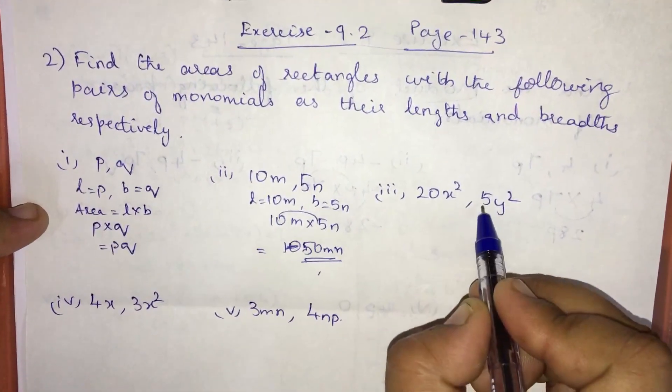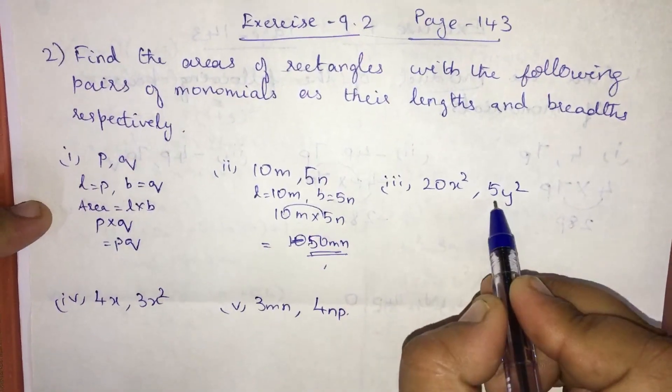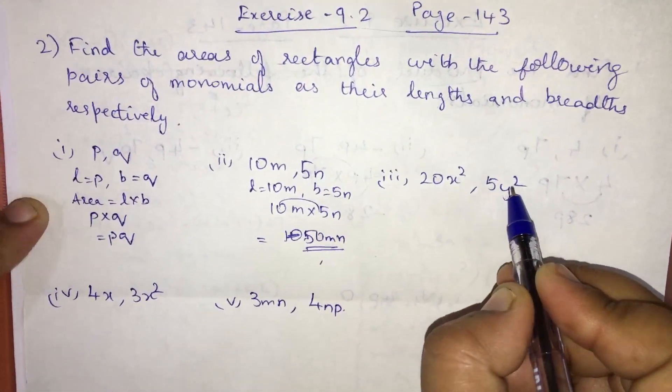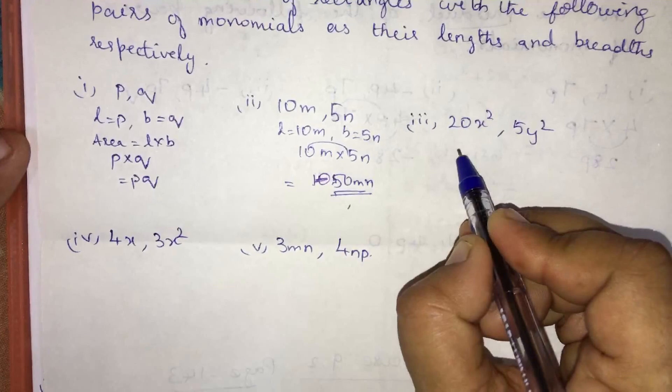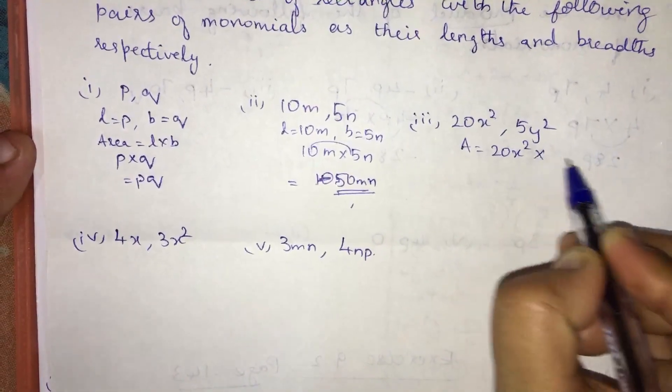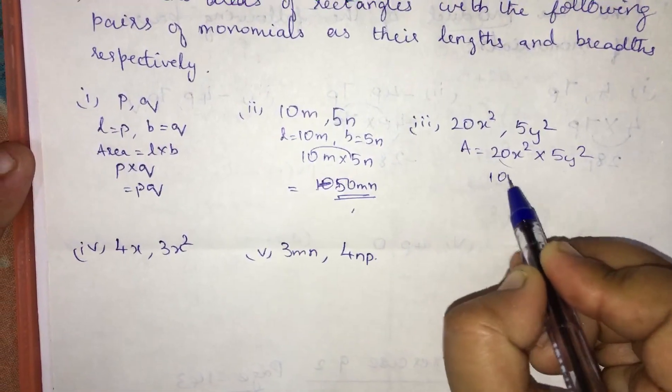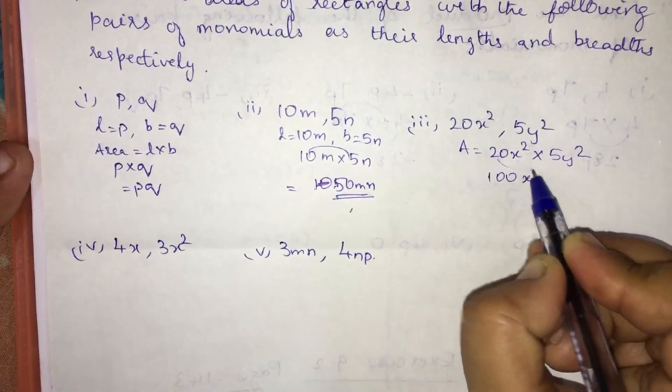20x square, 5y square. Length is 20x square, breadth is 5y square. Area is equal to 20x square into 5y square. 20 into 5 is 100, x square into y square is x square y square.